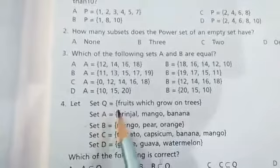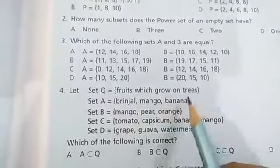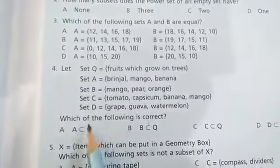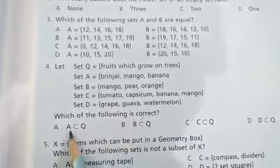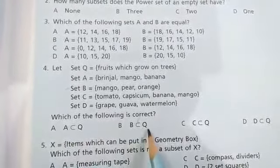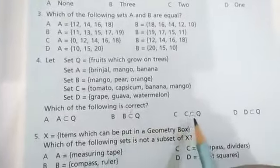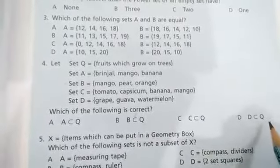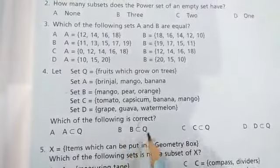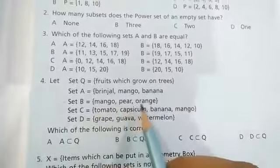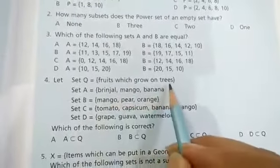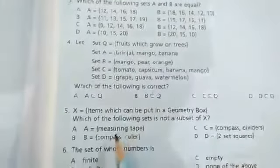Let set Q = {fruits which grow on trees}. Which of the following is correct? A is proper subset of Q, B is proper subset of Q, C is proper subset of Q, D is proper subset of Q. So option number B: B is proper subset of Q. Mango, pear, guava, these are fruits which grow on trees, so option number B is the correct answer.